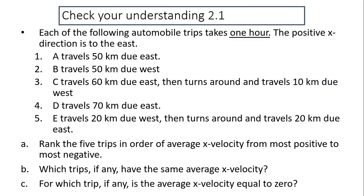Let's take a look at our example. Each of the following automobile trips takes one hour. The positive x direction is to the east. So you'll have five cars. A travels 50 kilometers to east. B travels 50 kilometers to west. C 60 kilometers east, then turns around 10 kilometers west. All these motions are in the same time. D is 70 kilometers east. E travels 20 kilometers west, then turns around, travels 20 kilometers east. Rank the five trips in order of average x-velocity from the most positive to the most negative.